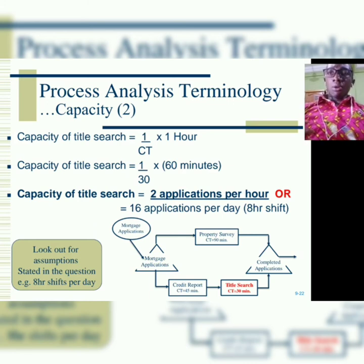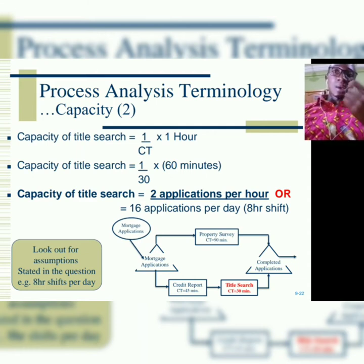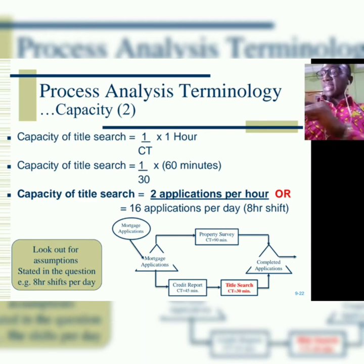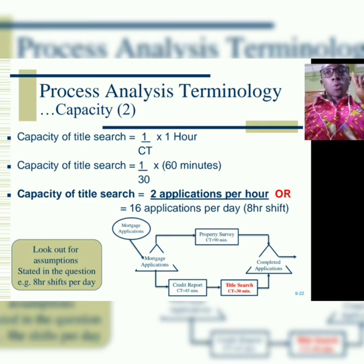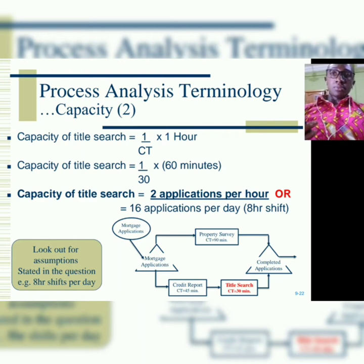Now we are going to calculate the capacity of some activities within a process flow diagram. Let's begin with title search. Capacity is 1 over cycle time per hour. The diagram gives the cycle time in minutes, so we multiply by 60 minutes since 60 minutes equals 1 hour. For title search, the capacity is 1 over 30, multiplied by 60, which gives you 2. So every hour, two title searches are done. If you work for 8 hours doing 2 title searches per hour, you would have done 16 searches. If you worked 24 hours, that would be 48 title searches — that is the capacity.